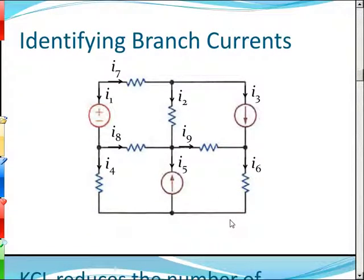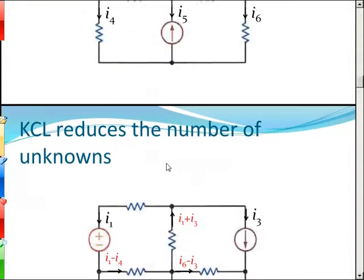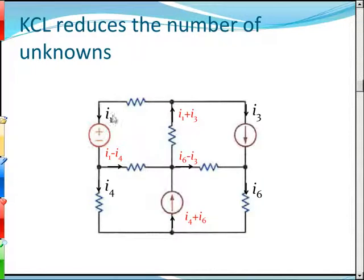Let's have a look at this example. We've got a bunch of branch currents here. How many unknowns do we have? You might say nine unknowns, but actually you have fewer. Why? Because of KCL — there are relationships between them. For instance, if you know I7 and I3, you can find I2. KCL reduces the number of unknowns to just four. If you know the currents in those four branches, you can find the current in any branch in the circuit.